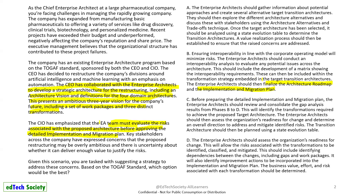Answer B is a good option, but key stakeholders said the restructuring is overly ambitious, and the question emphasizes a detailed implementation migration plan. Answer B doesn't go into that detail, so it might be a three-pointer but cannot be the best answer. Answer C says: before preparing the detailed implementation and migration plan, the enterprise architect should review and consolidate the gap analysis results from Phase B to D.